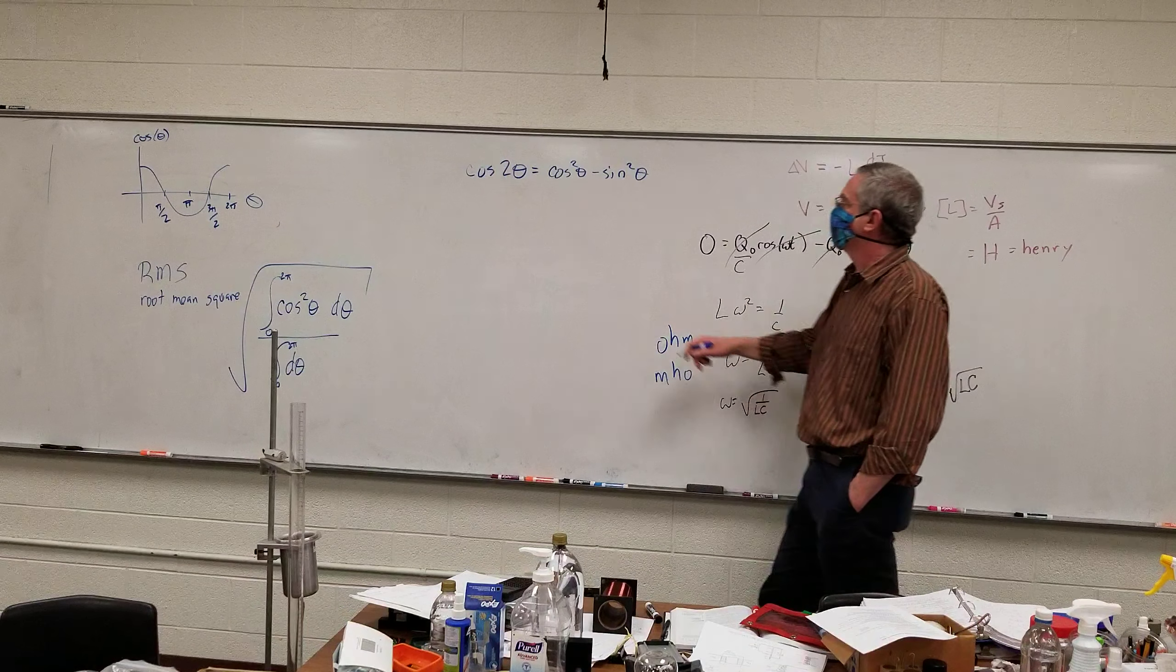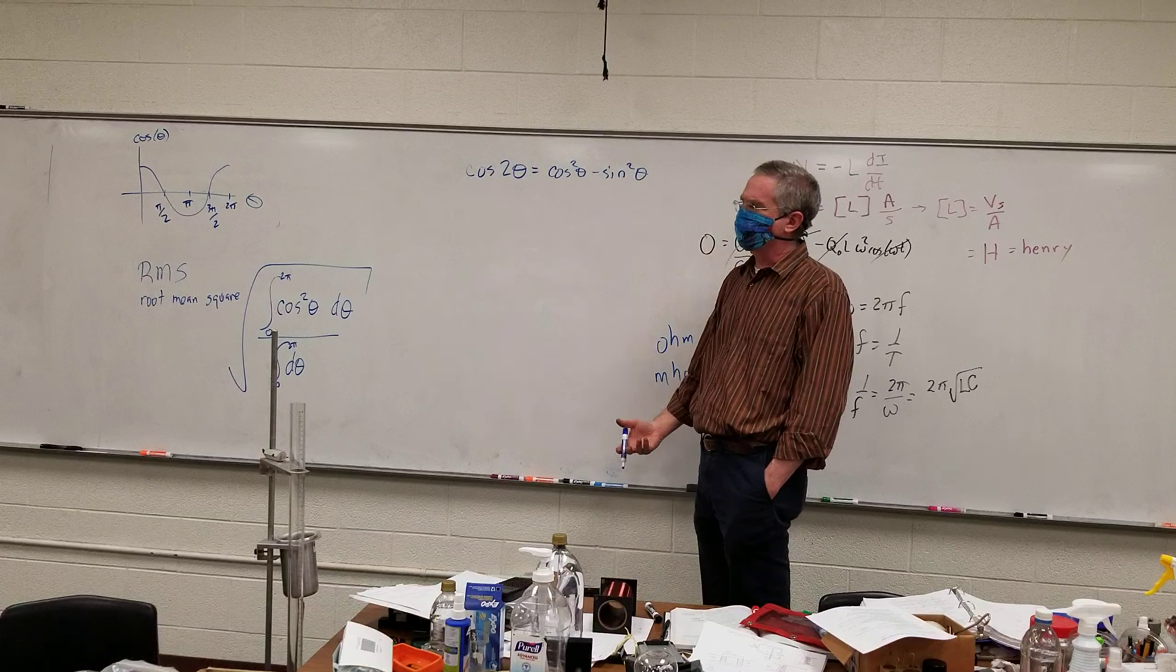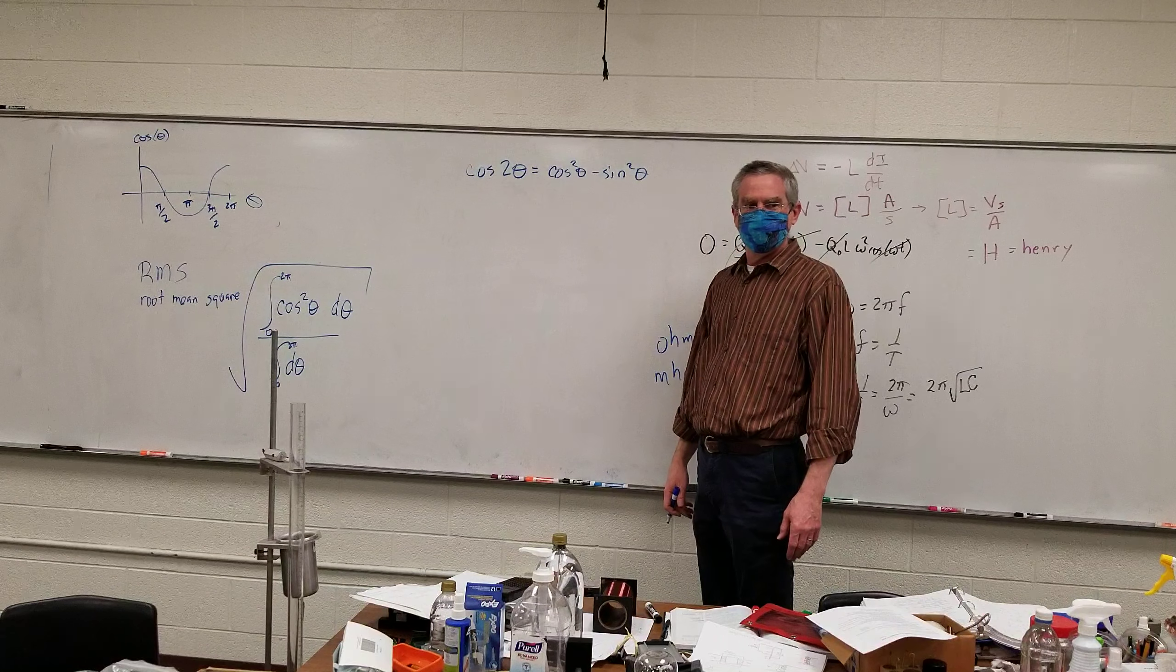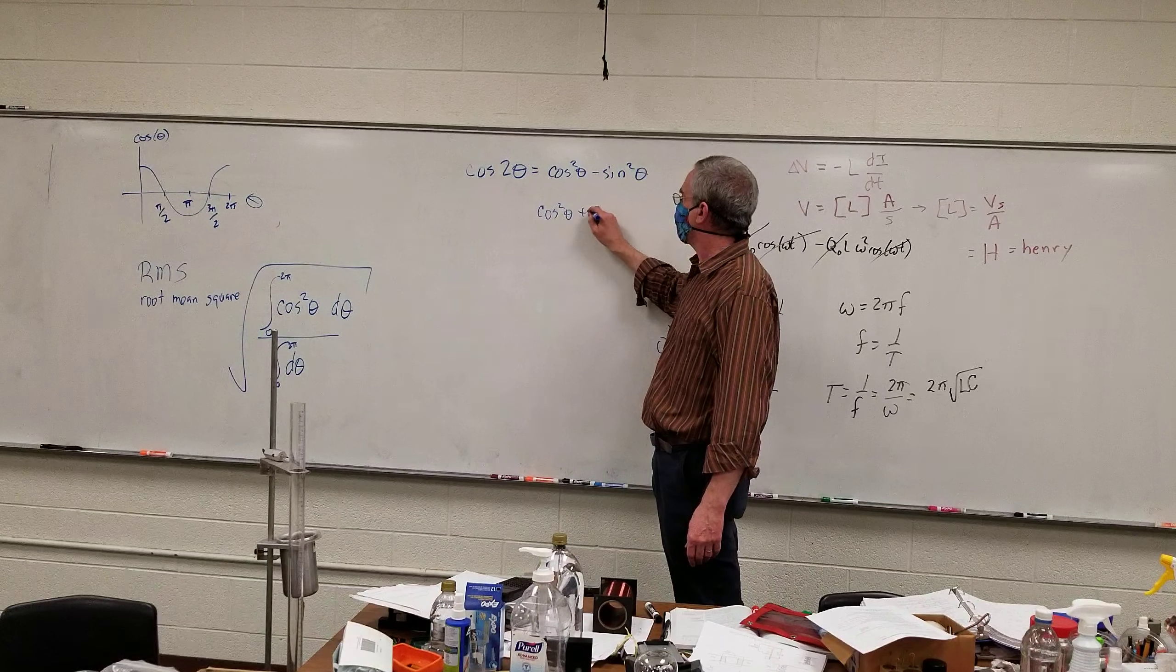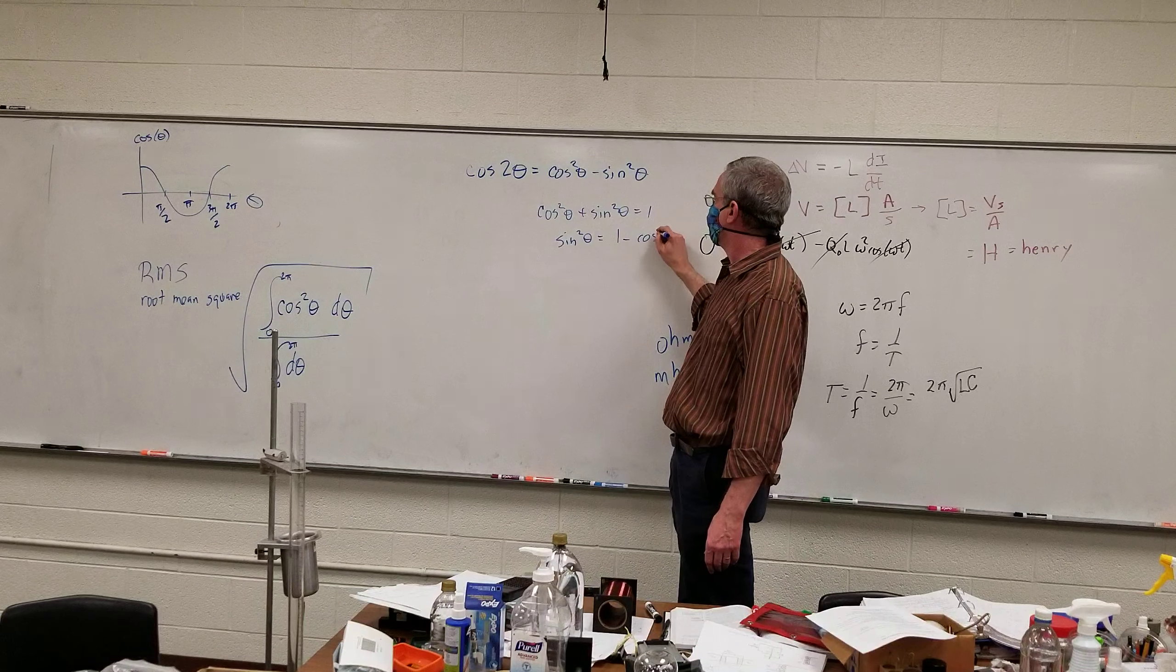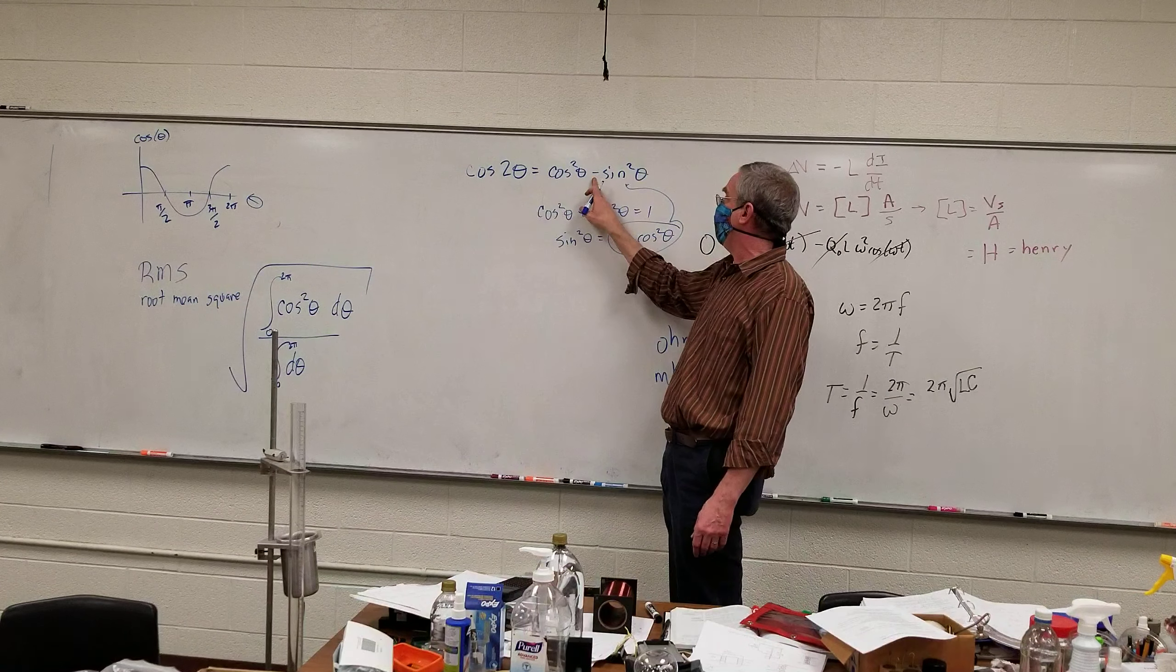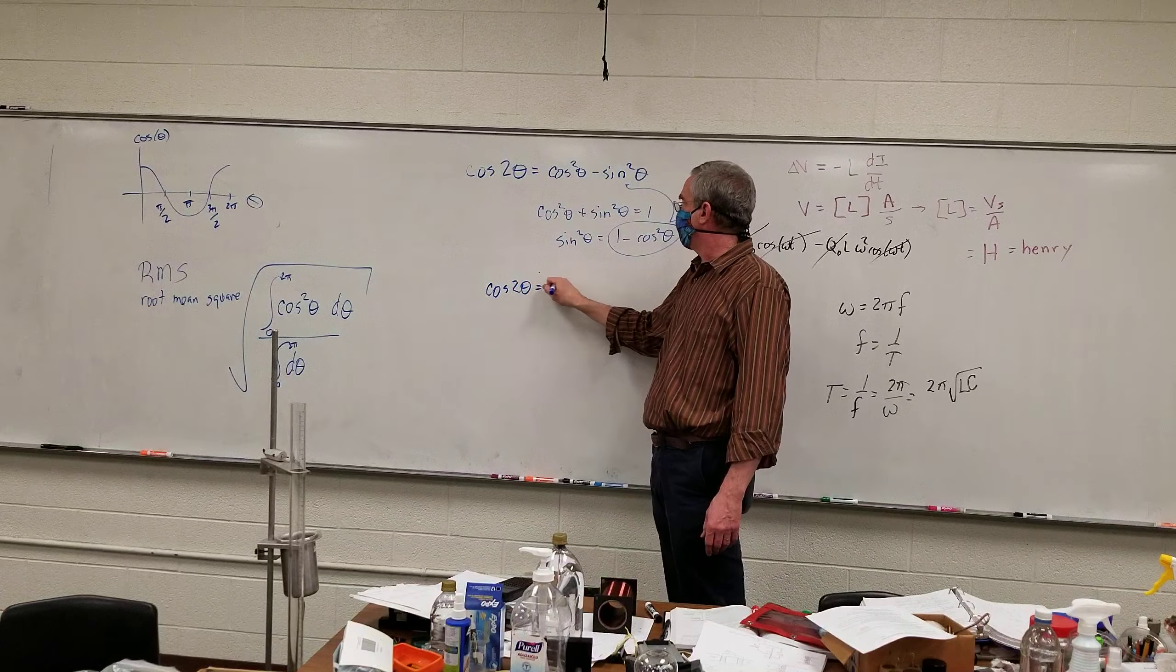So, what's the trig identity? Probably bad wording. What's the relationship between sine and cosine? Cosine squared plus sine squared equals one. So therefore, cosine squared plus sine squared is equal to one. Sine squared is equal to one minus cosine squared. If I plug that into here, that negative is distributed, and so we end up with cosine of two theta is equal to two cosine squared theta minus one.